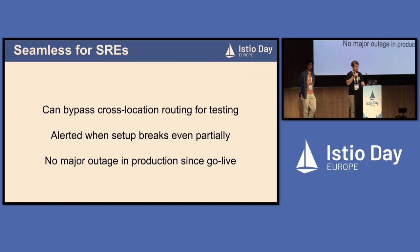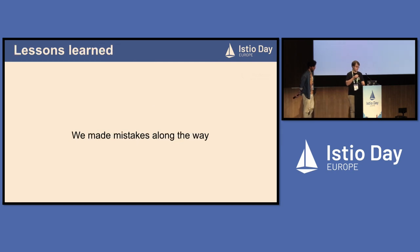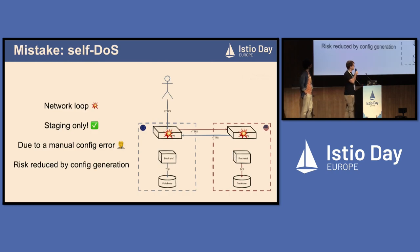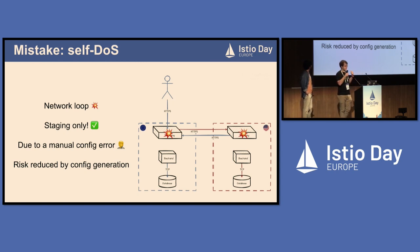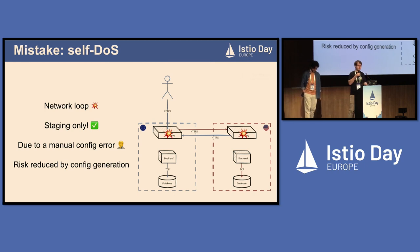Even though everything turned out great, we learned some lessons. First, we managed to self-DoS ourselves: we pushed a faulty manual configuration that created a network loop between our two gateways, and they crashed. Thankfully it was in staging. Since it was due to a manual config error, we now generate this configuration, and as long as the logic in the code is good, this should not happen again.